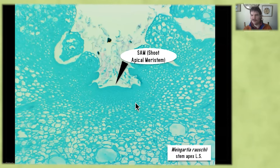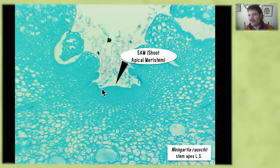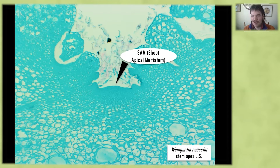When we take that section, this is what we get — a beautiful section. We can see this little dome of dense, quickly dividing cells at the very top of that stem. We're going to call this the SAM — the shoot apical meristem. That is where the entire shoot is growing from.